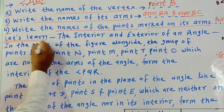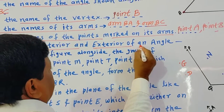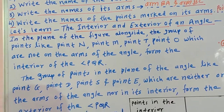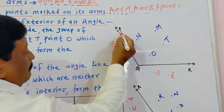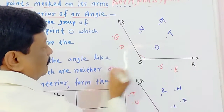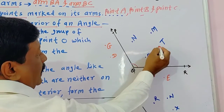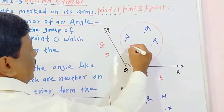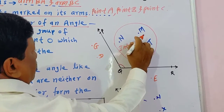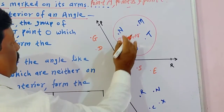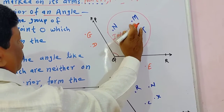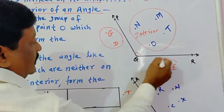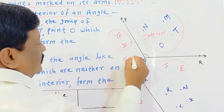Now let's learn the interior and exterior of an angle. Interior means the inside part and exterior means the outside part. See this figure — angle PQR is given. Points like O and T are inside the angle, so this part is called the interior. Then points G, B, and C are forming the exterior part of the angle.